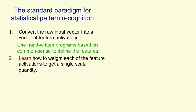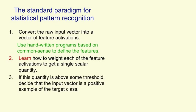What we learn is how to weight each of the feature activations in order to get a single scalar quantity. The weights on the features represent how much evidence the feature gives in favour of or against the hypothesis that the current input is an example of the pattern you want to recognise. When we add up all the weighted features, we get total evidence in favour of that hypothesis, and if it exceeds some threshold, we decide the input is a positive example of the class.